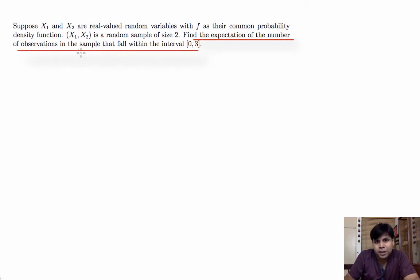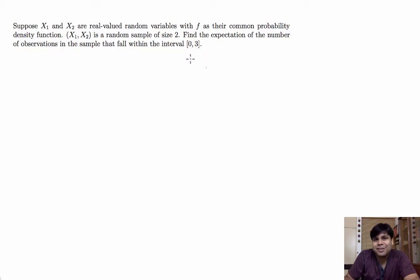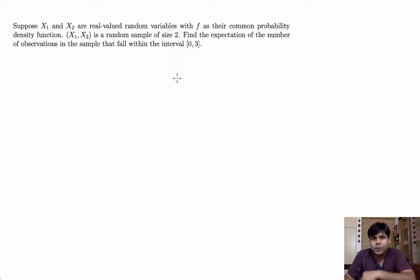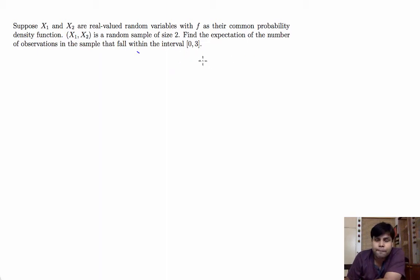So basically, if both x1 and x2 fall between 0 and 3, then the random variable that we are interested in takes value 2. If one of them takes a value between 0 and 3, then the random variable that we are interested in takes value 1.